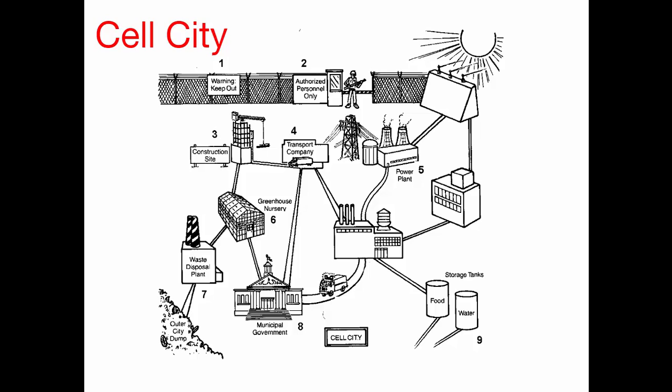Number one: this protective fence surrounding the city — what cell part would be most like that? That would be the cell wall. But it's just a plant wall, so this is going to be describing a plant cell. Cell wall would be accurate because it's a protective layer around the outside.